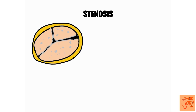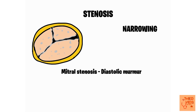In stenosis, the basic event is narrowing. The commissures of the valve will be narrowed and there won't be adequate lumen in the valve for blood to flow, whether in a semilunar or atrioventricular valve.